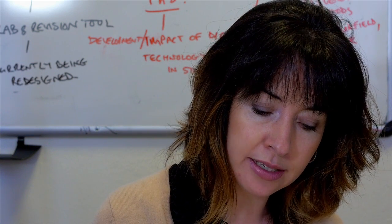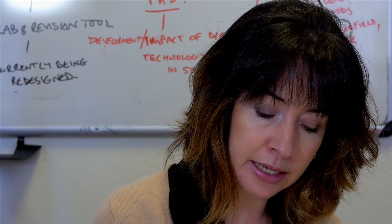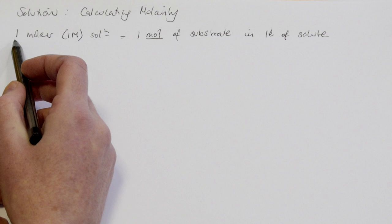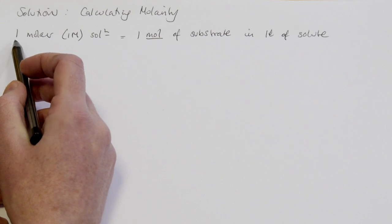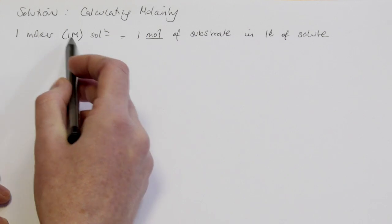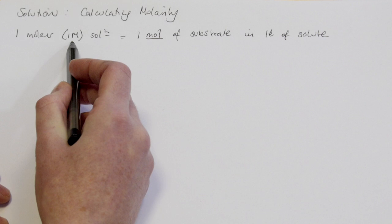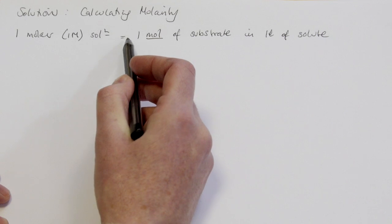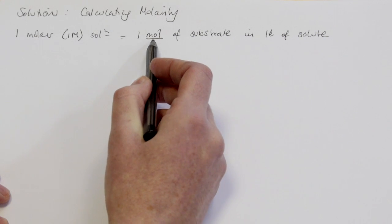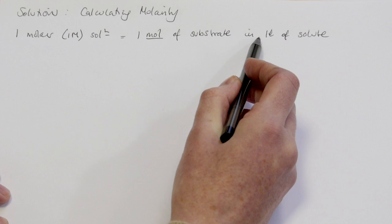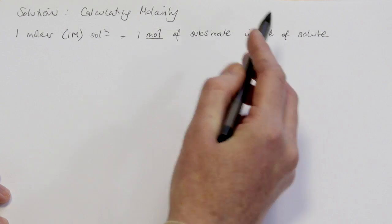The first we're going to look at is calculating molarity. Molarity is an expression of concentration of a solution, and a one molar solution is defined as one mole of the substrate dissolved in one litre of solute.